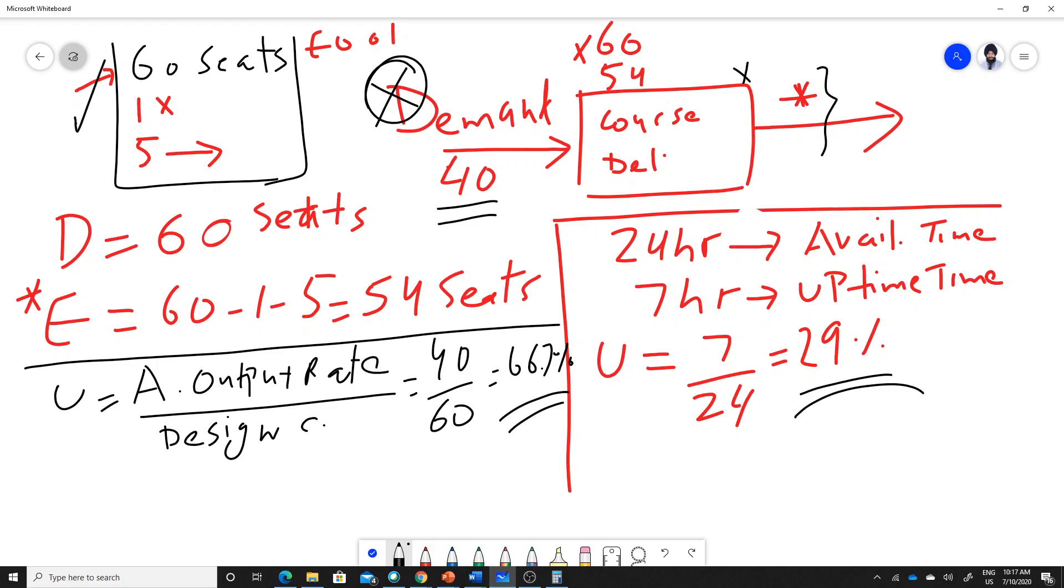However, it's easy to look into the inputs because these are fixed. So you can measure capacity from the input. Similarly, you can think about a fast food outlet.